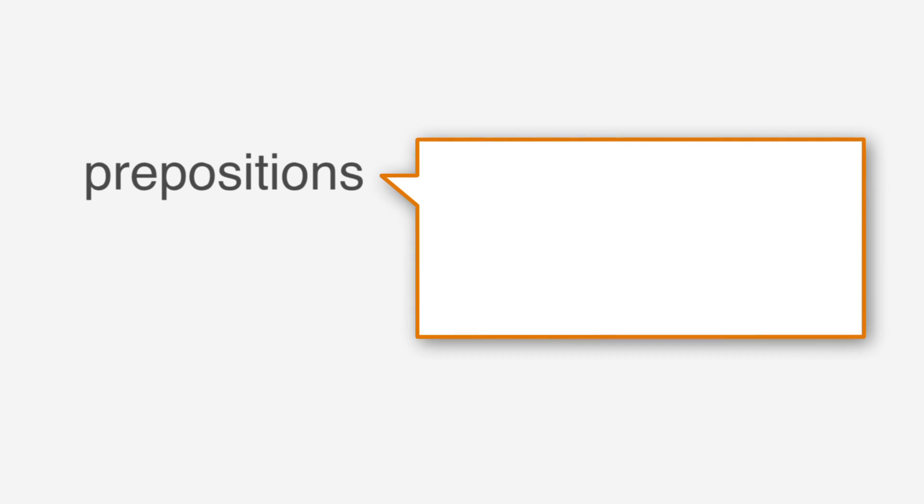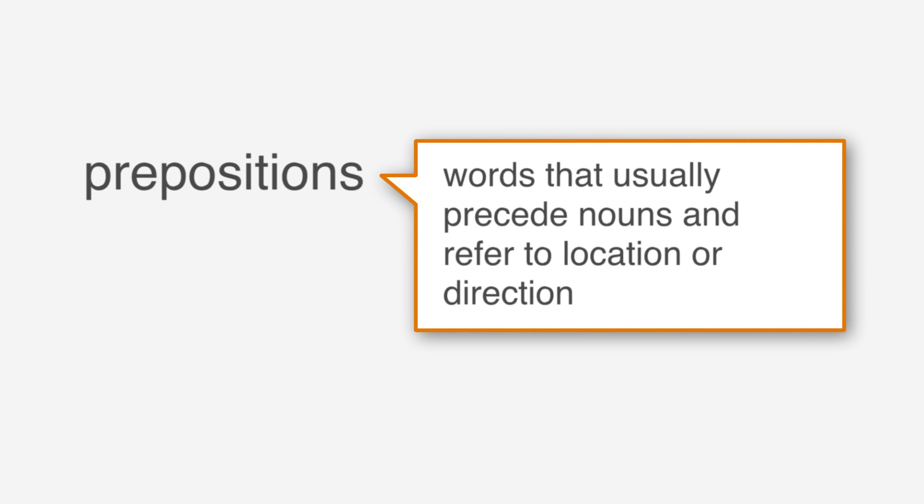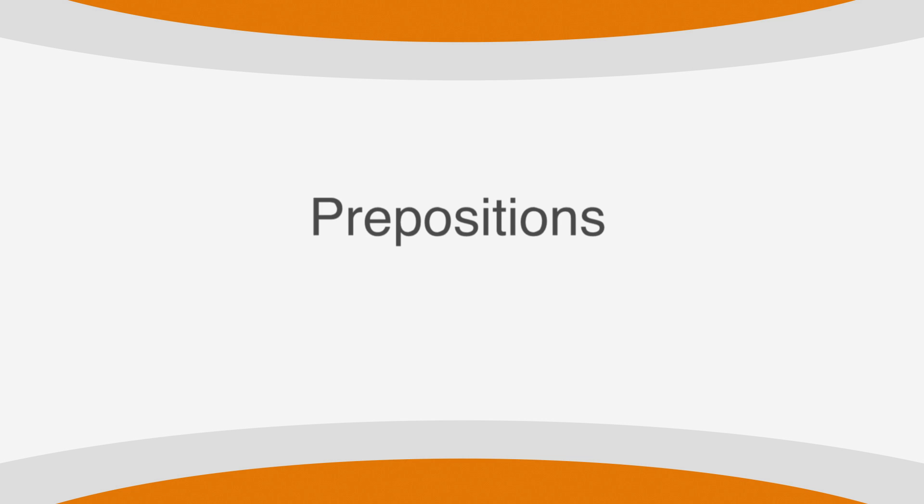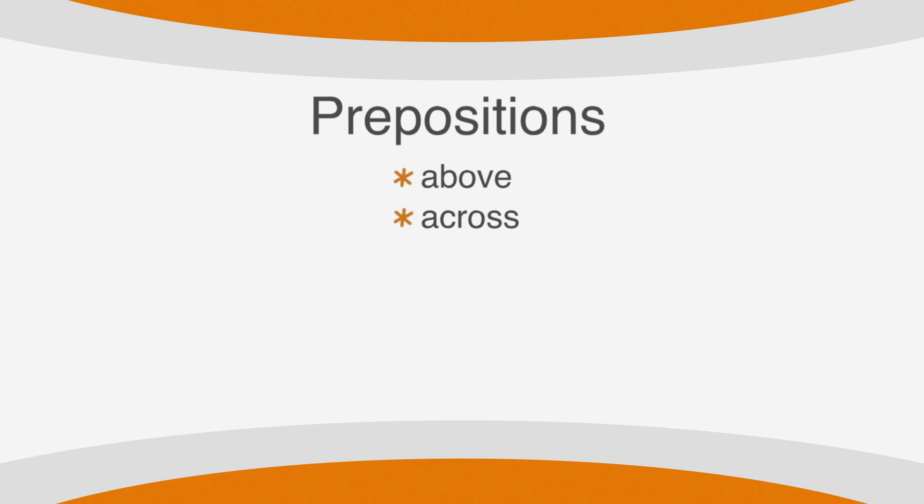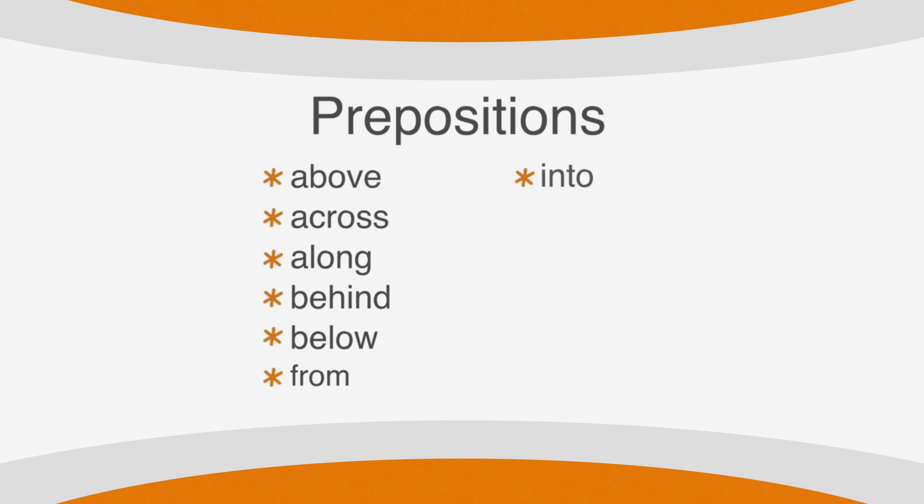Similar to modifiers, prepositional phrases can also interfere with subject-verb agreement. Prepositions are words that usually precede nouns and refer to location or direction. Examples of prepositions include above, across, along, behind, below, from, into, near, of, to, with, and underneath.